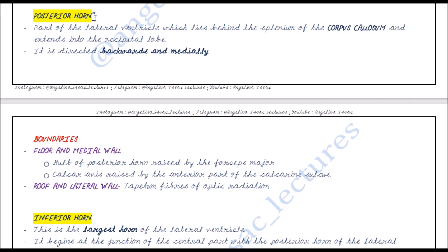Concising the important points on the posterior horn: it lies behind the splenium of the corpus callosum and extends into the occipital lobe, directed backwards and medially. The floor and medial wall are formed by the bulb of the posterior horn raised by the forceps major, and the calcar avis raised by the anterior part of the calcarine sulcus. The roof and lateral wall are formed by the tapetum fibers of the optic radiation.